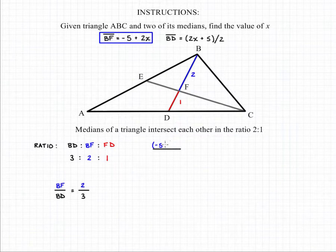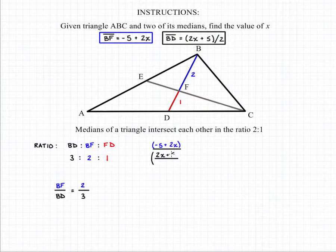We know BF is equal to -5 + 2x, and we know BD is equal to (2x + 5)/2. This has to equal the ratio that we figured out earlier, in this case 2 for the part to 3, the whole line for BD.